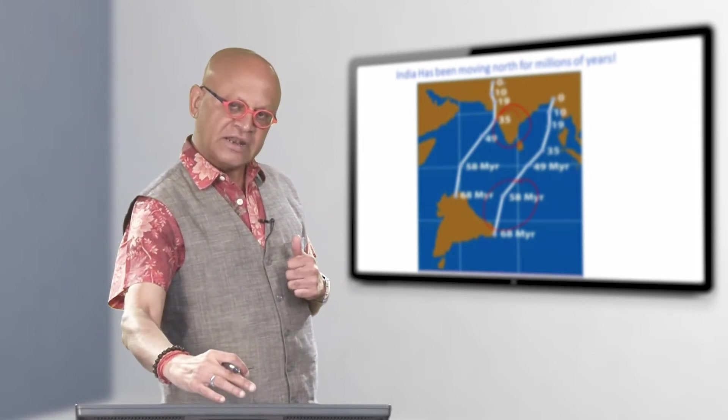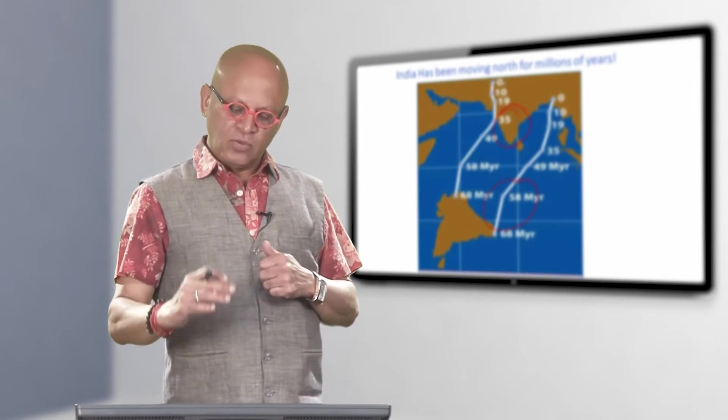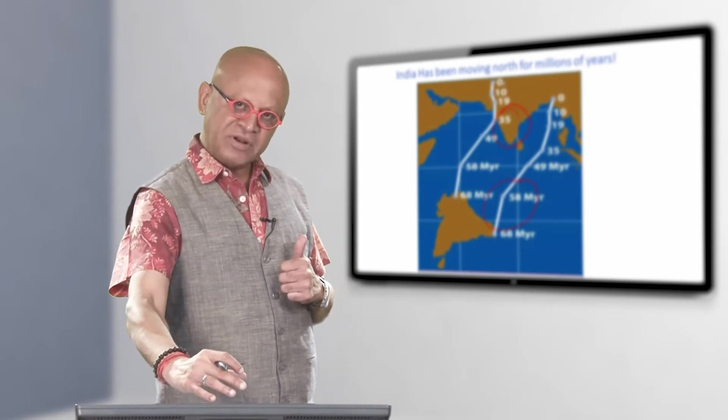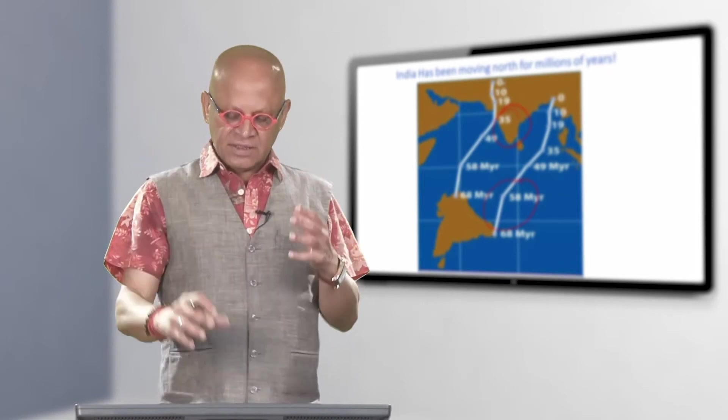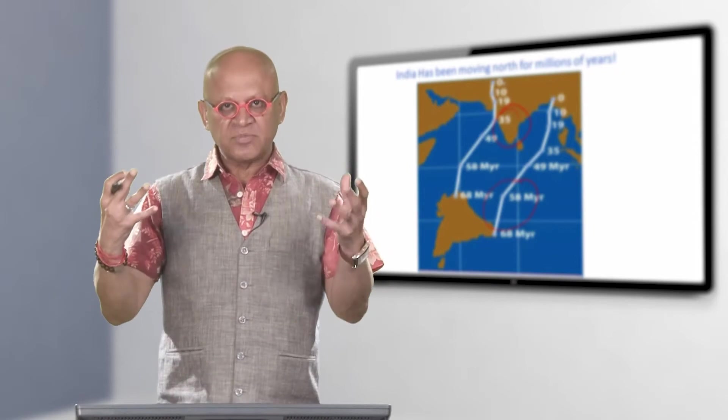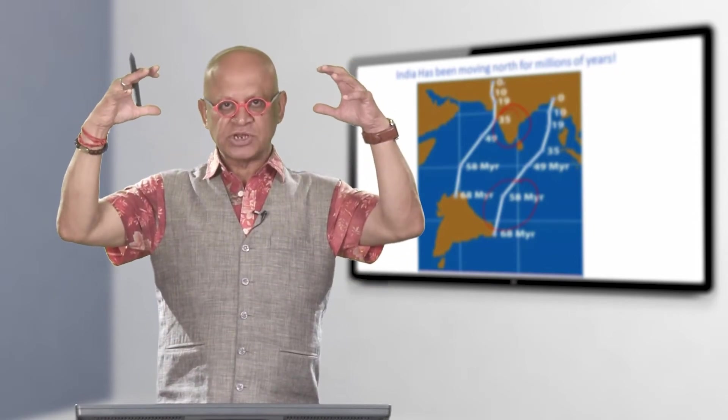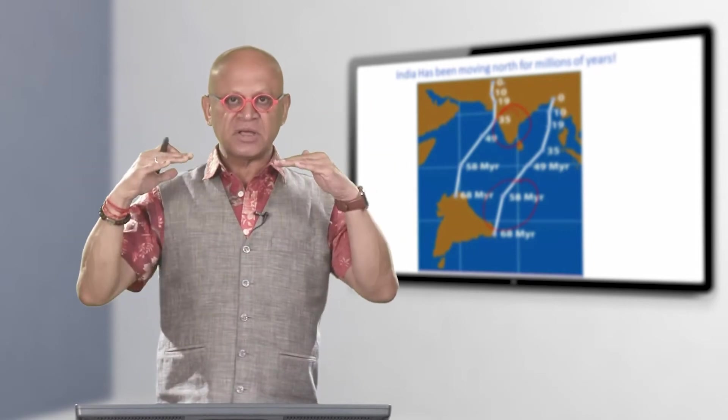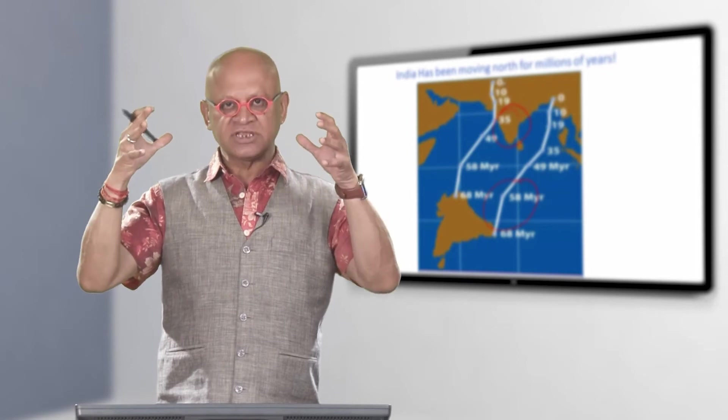As the continent settled into this configuration about 10 million years ago, whenever northern summer happened and the sun came overhead, the continent would heat up very fast, which makes it lower pressure. A warm surface will have lower pressure in the atmosphere above, whereas the ocean is heating up much slower, so its temperature is lower and its pressure is higher.